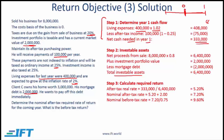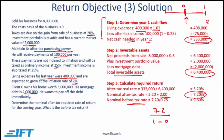Step 3 — Required return: The real return equals $333,000 / $6,400,000. Since the client wants to maintain the after-tax purchasing power of the portfolio, we add inflation of 2%, giving a nominal after-tax required return of approximately 7.2%. To find the before-tax rate, divide by (1 − tax rate): 7.2% / (1 − 0.25) = 9.6%.